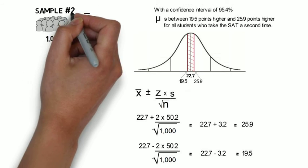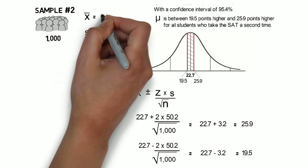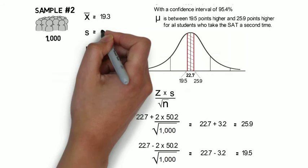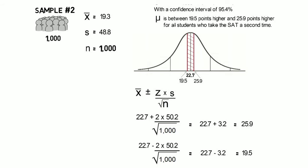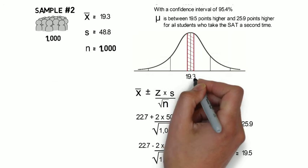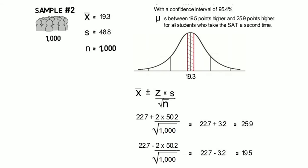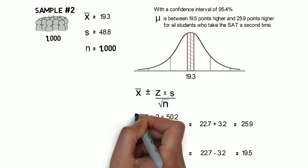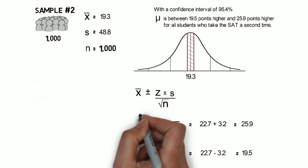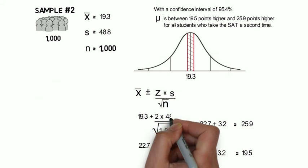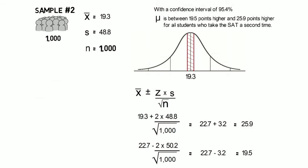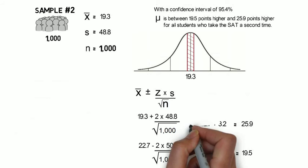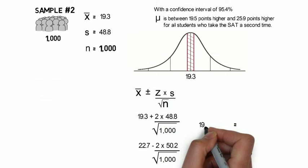In our second sample, the average this time was 19.3 points higher and a standard deviation of 48.8. Let's plug these numbers into our formula. And see what we get for upper and lower bounds for our population mean. So we have our x-bar plus 2 times standard deviation, or 19.3, plus 3.1. That gives us 22.4.